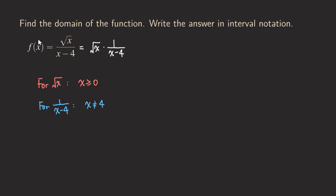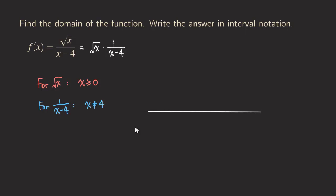Now what we do is that if we want to find the domain for this function, we actually put those two conditions together to get the domain for the whole function. What we are going to do is set up a number line. So this is our x-axis, and we can see that there was a zero here and a four here, so we put both zero and four on the number line.